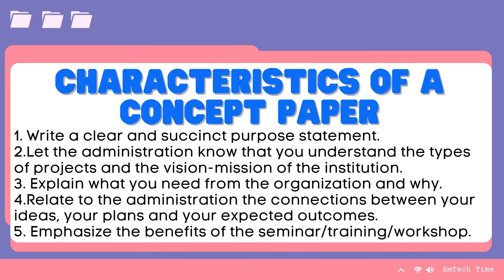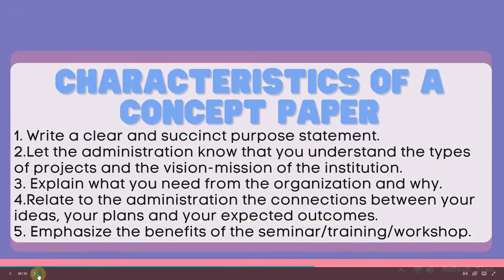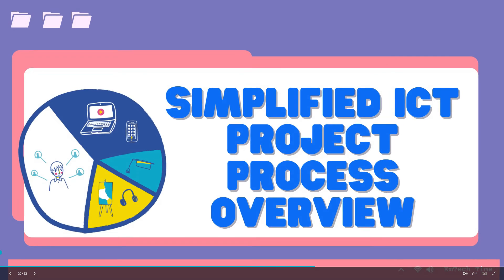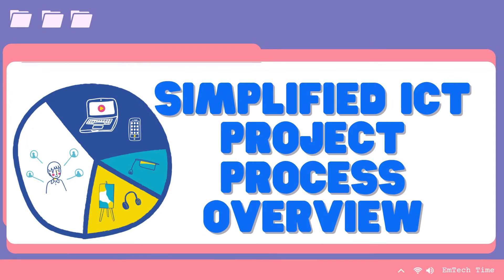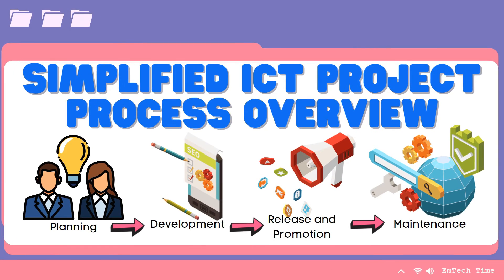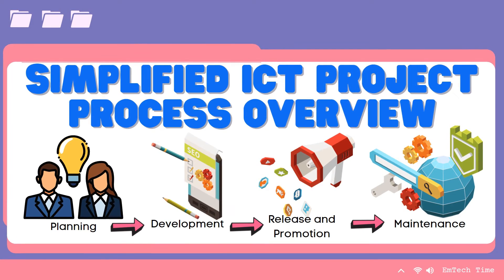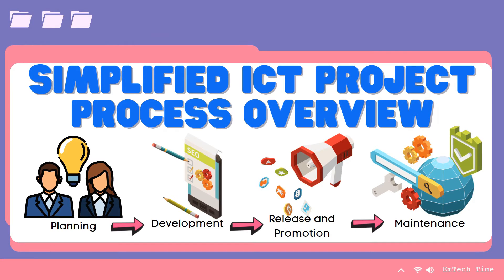Let's have a simplified project process overview — an overview of how we are going to conduct the project. The first part is Planning. It involves the following tasks: conceptualization, researching, setting deadlines, assigning people, finding a web or blog host, creating a sitemap, listing down all applications that you need, and funding, if applicable.